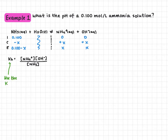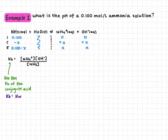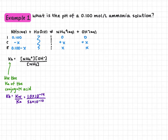We want to use the Ka of the conjugate acid. Kb is calculated using the formula: Kb equals Kw over Ka. Kw at 25 degrees Celsius is 1 × 10⁻¹⁴. Ka for ammonium is 5.6 × 10⁻¹⁰. That gives us a Kb value of 1.8 × 10⁻⁵.